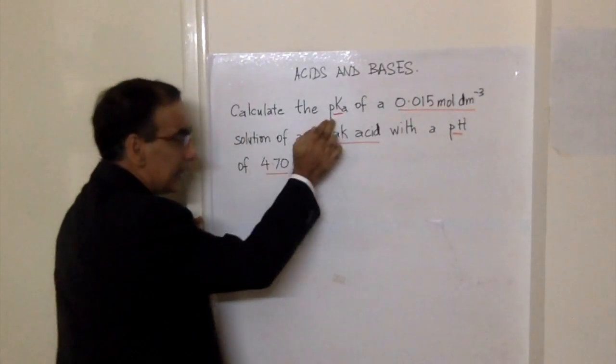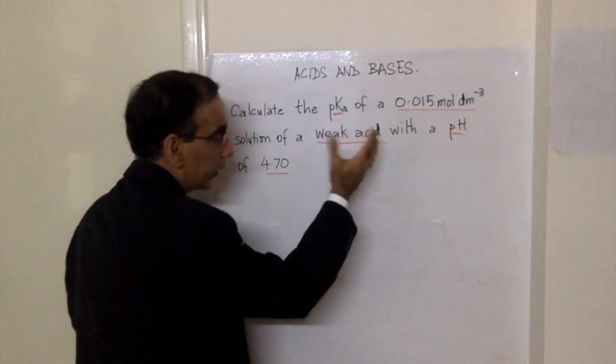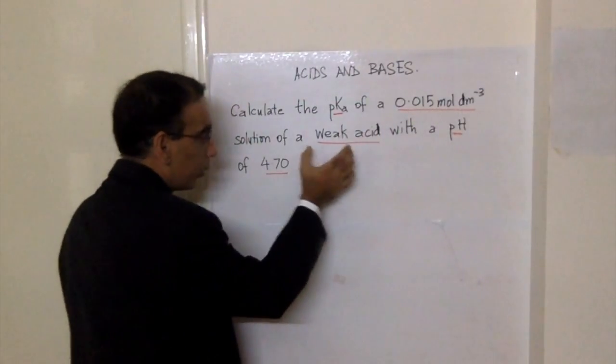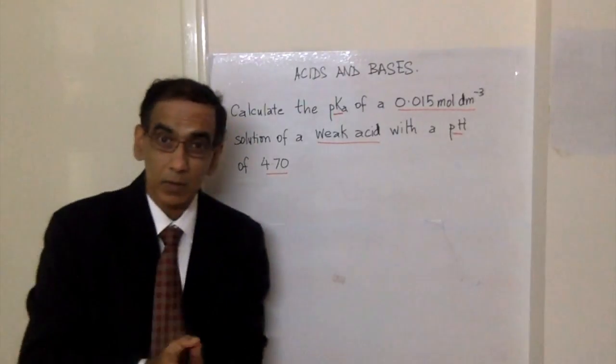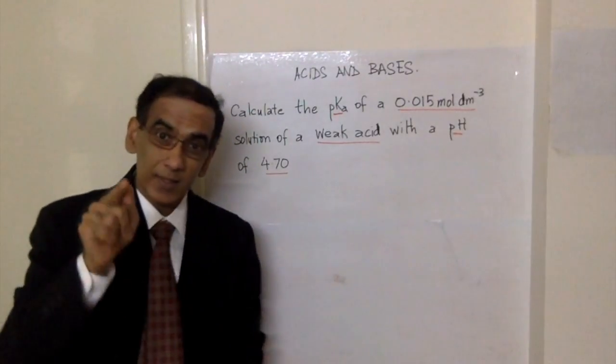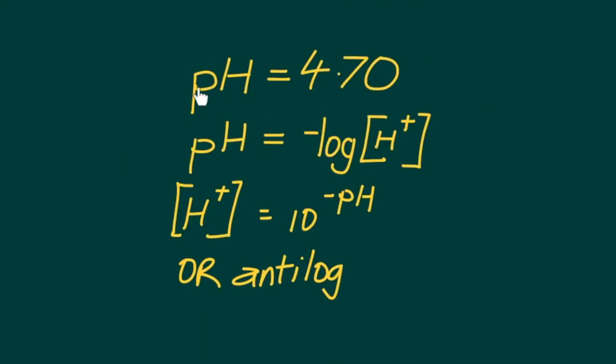Welcome again. Calculate the pKa of a 0.15 molar solution of a weak acid with a pH of 4.70. Let's go in and take a look at the steps to solve this problem.